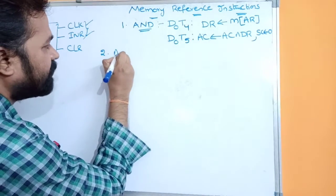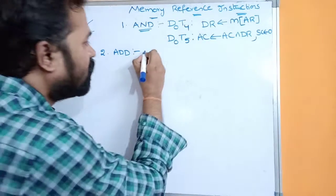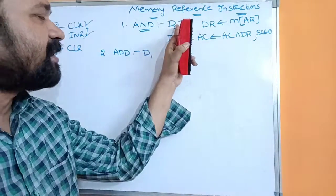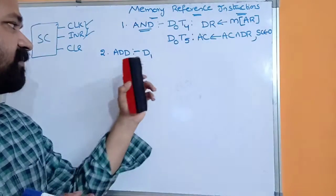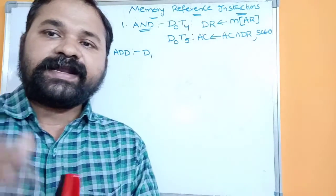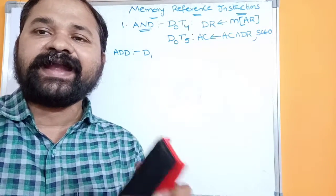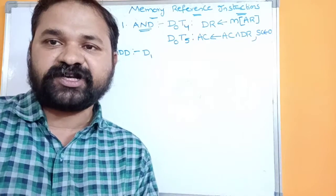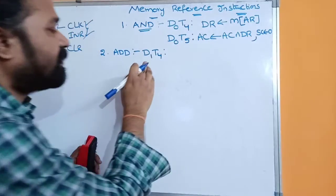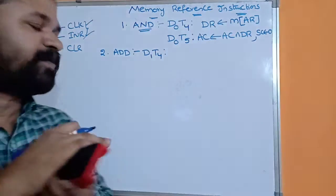Now let's see the ADD instruction. The ADD instruction is executed when the decoder's output D1 is active, whereas AND is executed when D0 is active. T0, T1, T2, and T3 are for fetching, decoding, and determining the type of instruction. The next timing signal is T4, so during decoder output D1 and timing signal T4, the ADD operation will be performed.